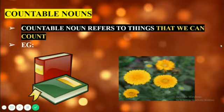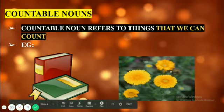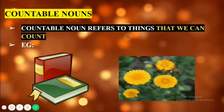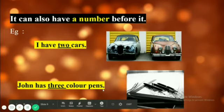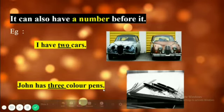So if I ask you how many books were there — two books. When I ask you how many flowers were there — one, two, three, four — you get an answer of four flowers. So books and flowers are countable nouns. Countable nouns can also have a number before them. For example, I have two cars. John has three color pens.